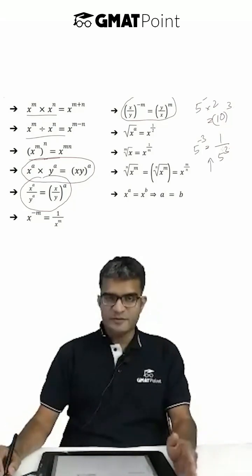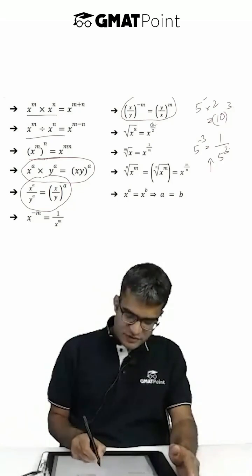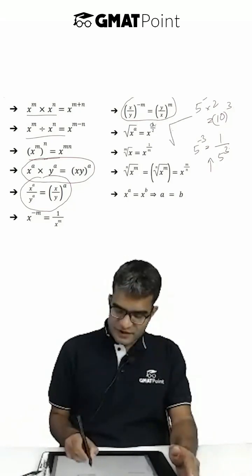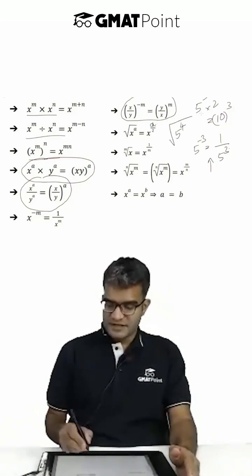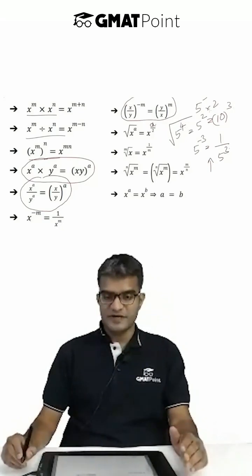Square root of x to the power a equals x to the power a by 2. For example, the square root of 5 to the power 4 equals 5 squared, because a by 2 is 4 divided by 2.